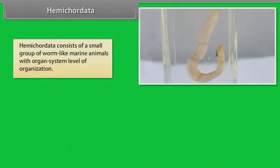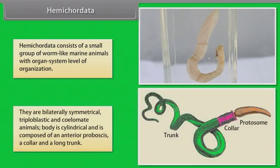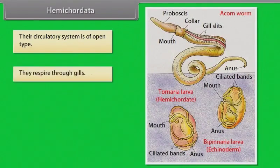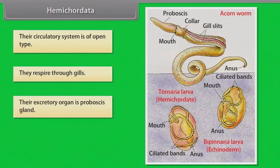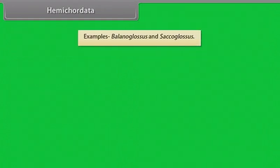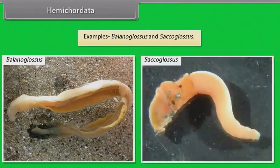Hemichordata consists of a small group of worm-like marine animals with organ system level of organization. They are bilaterally symmetrical, triploblastic and coelomate animals. Body is cylindrical and is composed of an anterior proboscis, a collar and a long trunk. Their circulatory system is of open type. They respire through gills. Their excretory organ is the proboscis gland. Sexes are separate. Fertilization is external. Development is indirect. Examples: Balanoglossus and Saccoglossus.